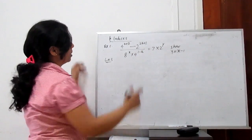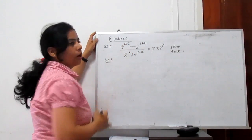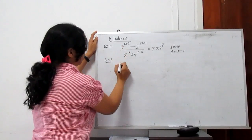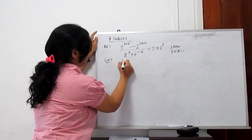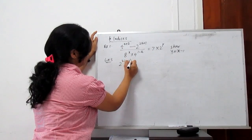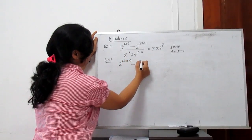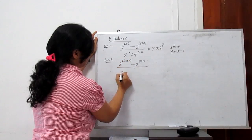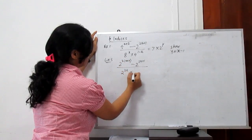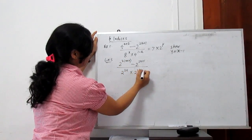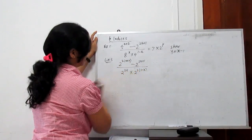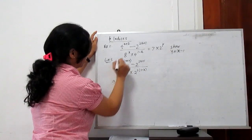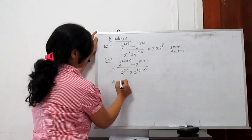Starting with the left hand side, convert every base into 2 since all are multiples of 2. So this becomes 2 to the power 2x plus 2, minus 2 to the power 2x plus 1, upon 2 to the power 3x times 2 to the power 2 times 1 minus x. What is this? It is 2 to the power 2x plus 2.